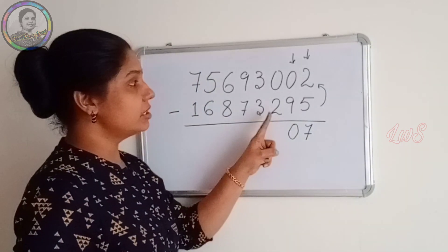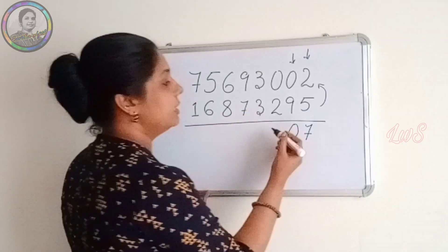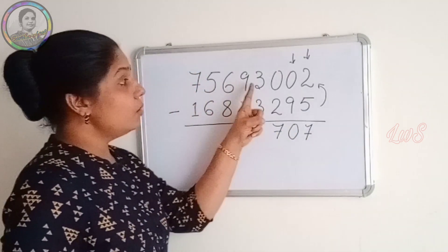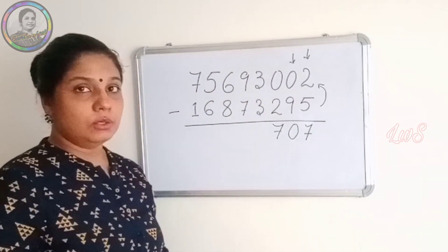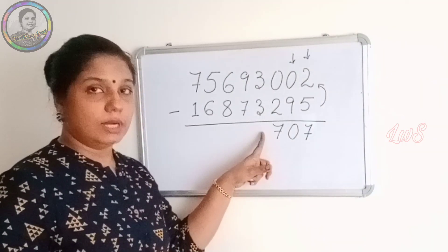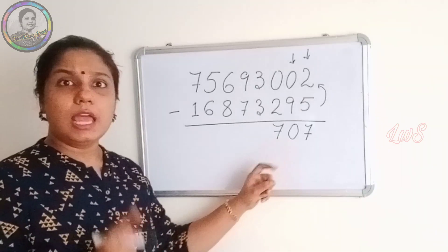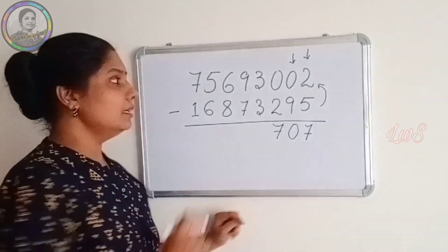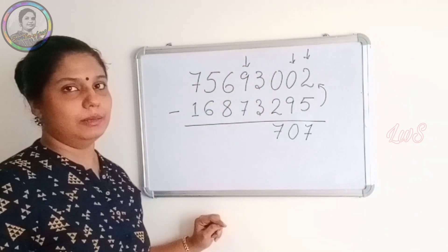Again, reverse subtraction: 2 minus 0 is 2, and we write 9 minus 2, which is 7. Now 3 minus 3 is 0. But we don't write the actual 0 here. Why? Because we are in the world of complement and nobody can make us come out of this world — until our first number is bigger than the second number.